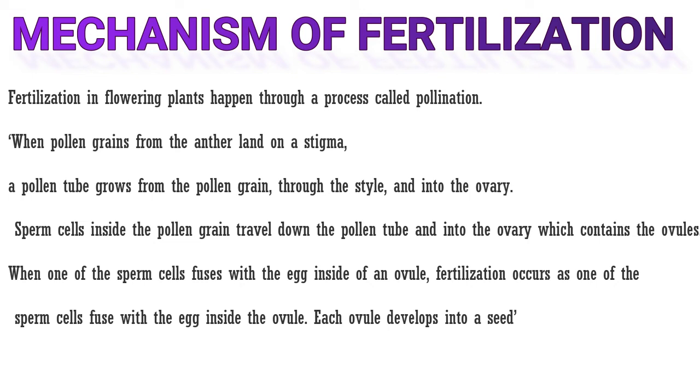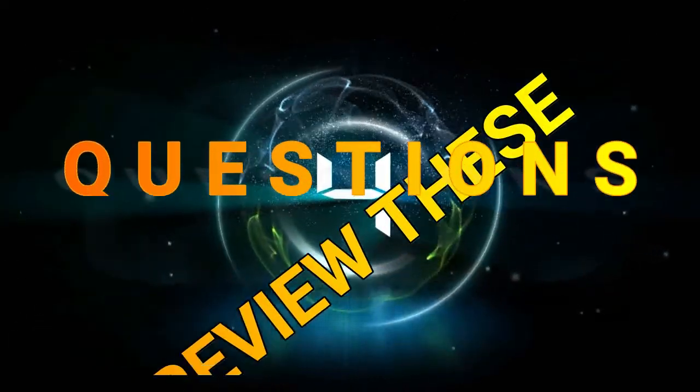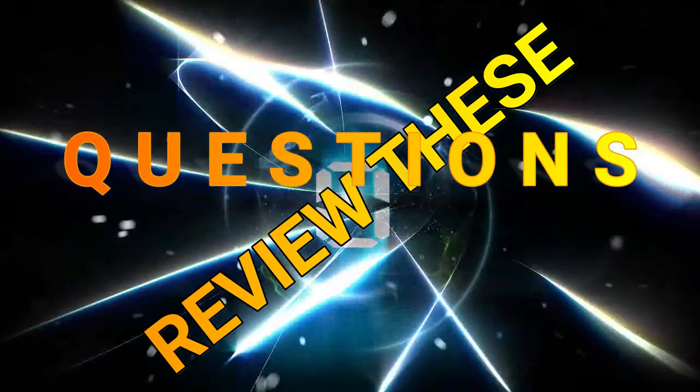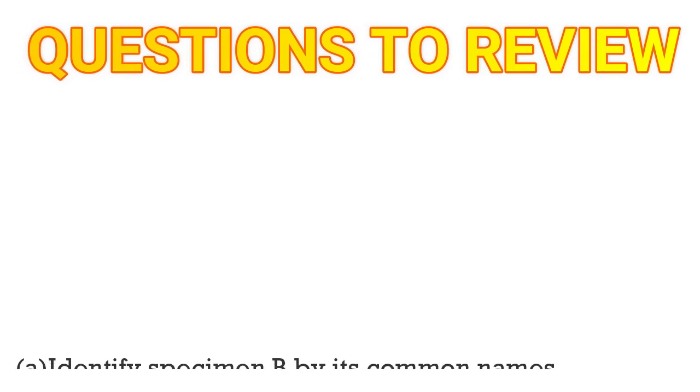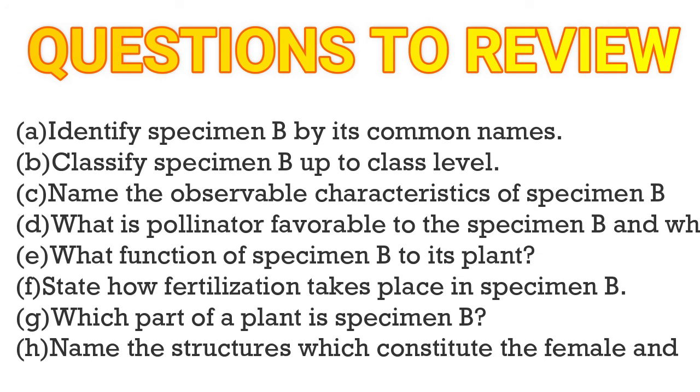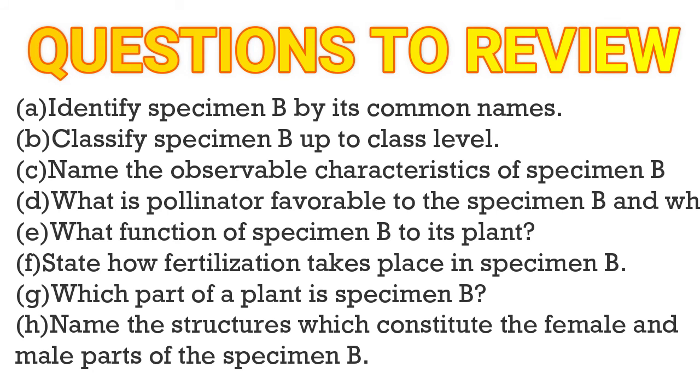You think that you have understood our lesson. For intensive understanding, let's review the following questions. Assuming that hibiscus flower is specimen B, identify specimen B by its common name. Classify specimen B up to class level. Name the observable characteristics of specimen B.